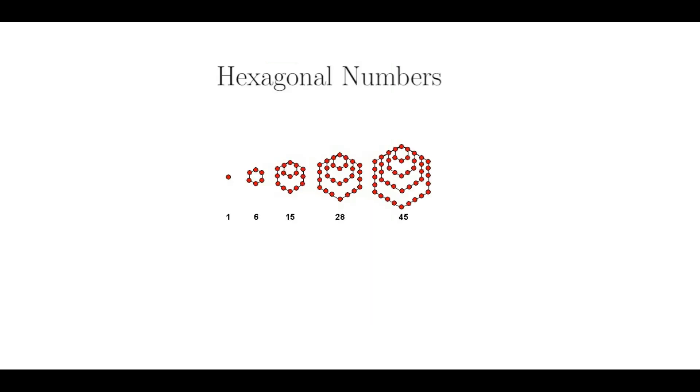Let's start with hexagonal numbers. As the name implies, hexagonal numbers relate to the regular hexagon. Specifically, the nth hexagonal number is the number of points in a hexagon with n regularly spaced points on a side. Here is a visual interpretation of the first few hexagonal numbers.